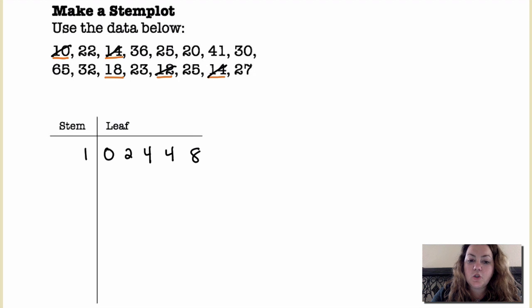Alright then I'm gonna move to my 20s, all the numbers in the 20s. So I have my stem will be 2 and my leaves. I have a 20, I have a 22, I have a 23, a 25, a 25 again, and a 27.